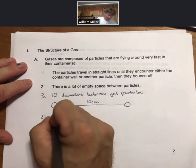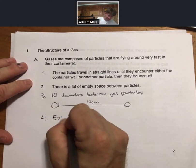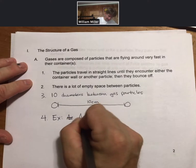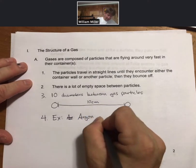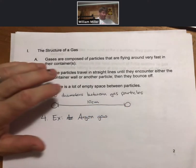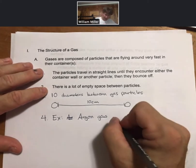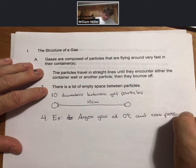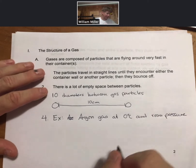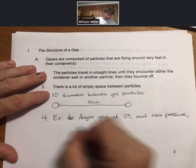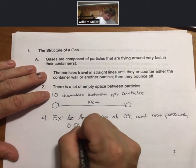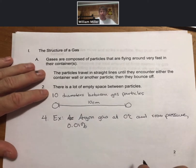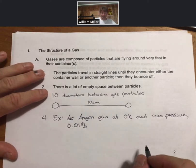Now as an example for argon gas at zero degrees Celsius and room pressure, which just means the pressure in the room and we'll talk about what that is in a couple minutes, 0.01 percent of the volume of the gas is particles.